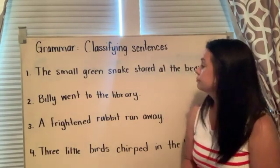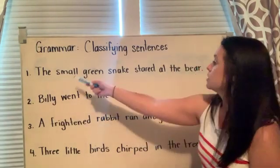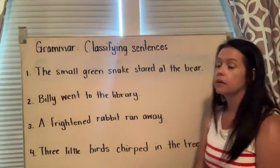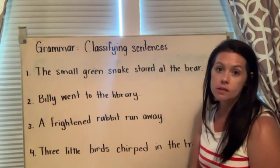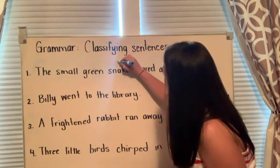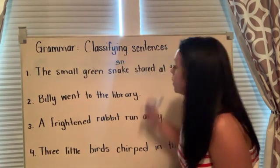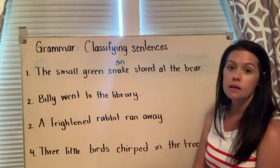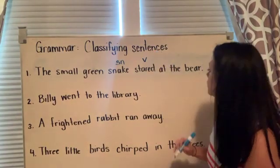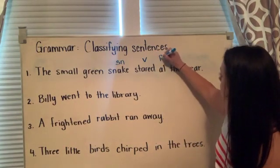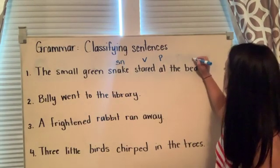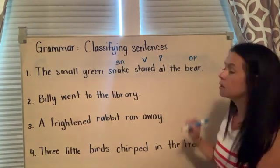Reading sentence number one: The small green snake stared at the bear. What stared at the bear? Snake. Subject noun. What is being said about snake? Snake stared. Verb. At? Preposition. At what? Bear. Object of the preposition.